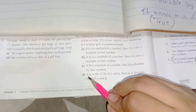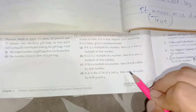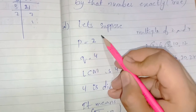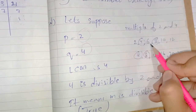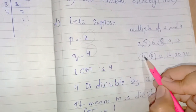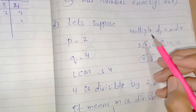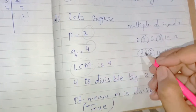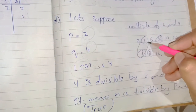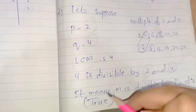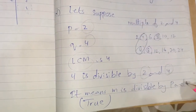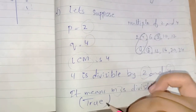Statement D: if m is the LCM of p and q, then m is divisible by both p and q. Suppose p = 2 and q = 4 — multiples of 2: 2, 4, 6, 8, 10; multiples of 4: 4, 8, 12, 16, 20. The lowest common multiple is 4. Since 4 is divisible by 2 and by 4, m is divisible by both p and q. This statement is true.